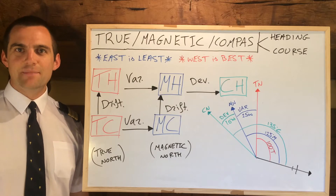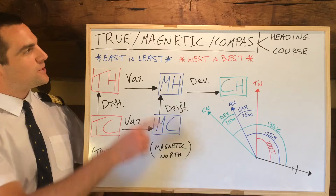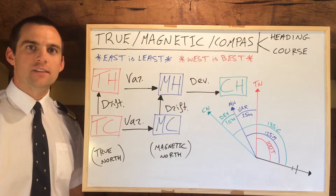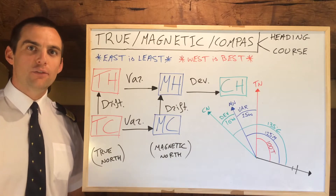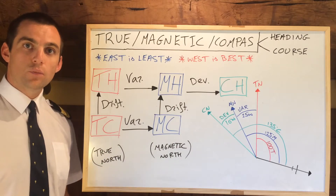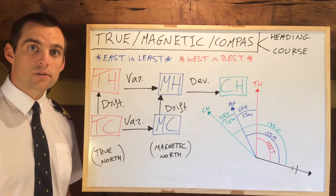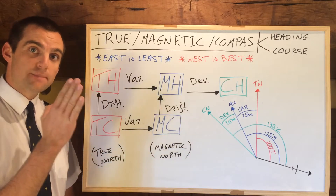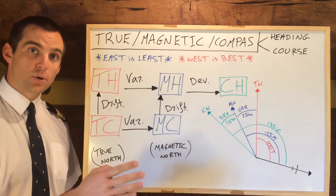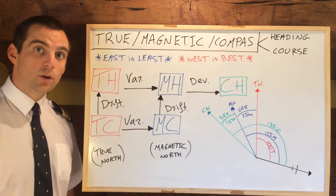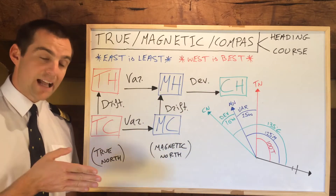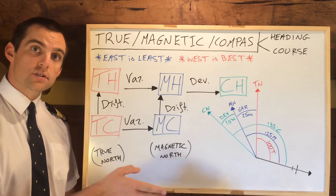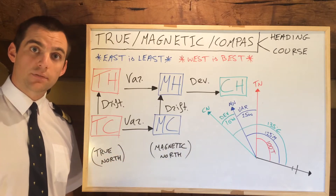Welcome to ATPL Theory. Today we're going to be talking about true, magnetic, and compass headings and courses, and how to go from one to the other. First off, what's the difference between a heading and a course? A heading is where our aircraft is pointing, and a course is the track that we're actually flying — drawing across the surface of the earth — and they can be quite different.